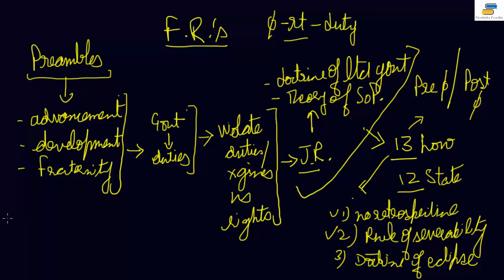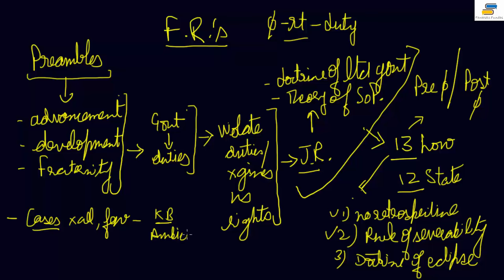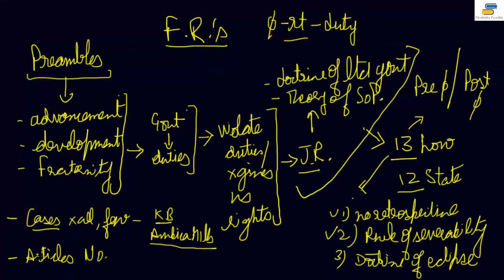Before proceeding, please understand that not all cases are equally important. There are a few cases you must remember — for example, the Keshwananda Bharti case, which you cannot omit. Or the case of Shri Ambika Mills, which is related to the doctrine of eclipse — this doctrine originated in that case. These are landmark cases you cannot miss in your paper. You can omit almost all other cases I reference, but these key ones must be written.